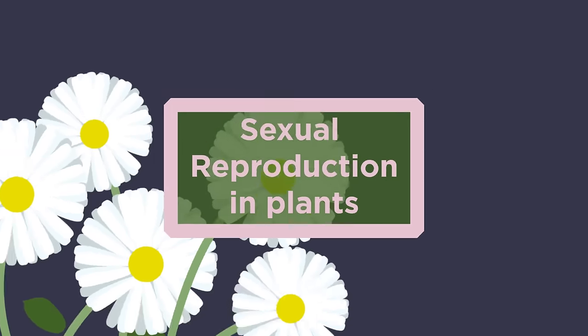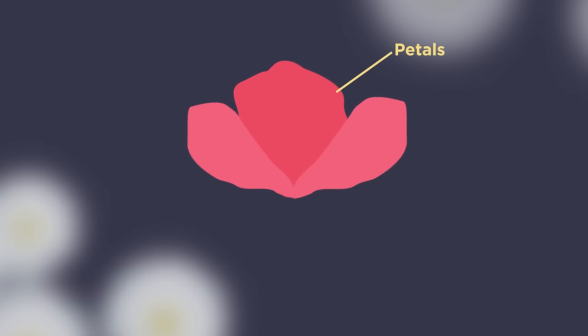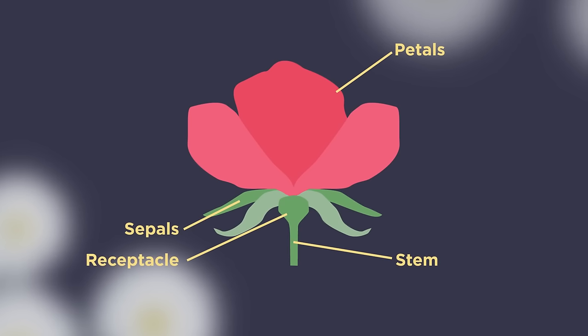Sexual reproduction is carried out in the flowers — the flowers contain the sexual organs. Let's start with labeling the different parts of the flower. The petals and the sepals help protect the flower bud and can be brightly colored or scented to attract pollinators. The stem and the receptacle are the parts that connect the flower to the rest of the plant.